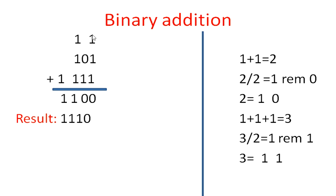We write 1 and keep it. Added here again: 1 plus 1 equals 2. The result comes as 1, 0. So we wrote 0 and carry is 1. Then 1, 1, 1, 1 — the addition gives us 101 and 111, adding together gives 0011.